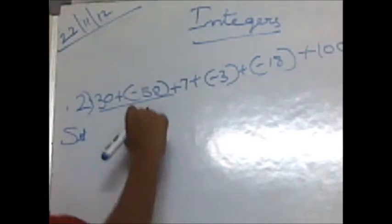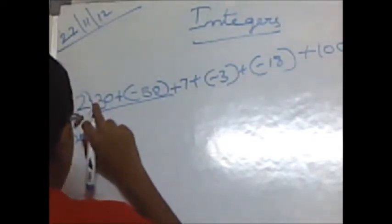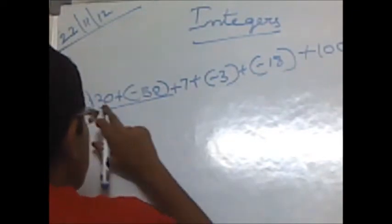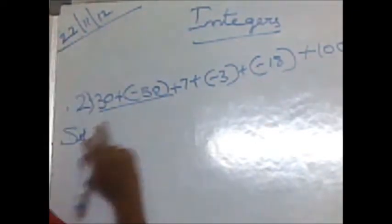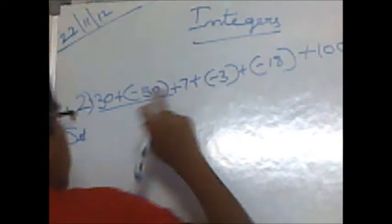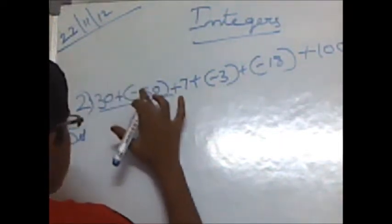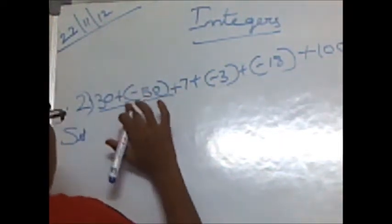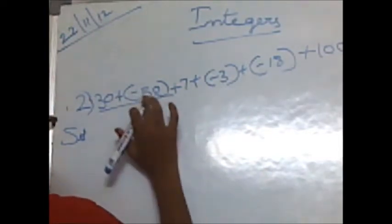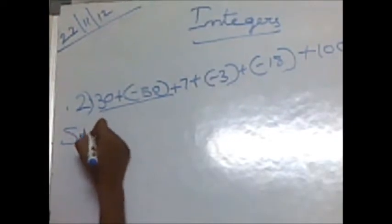First, we have 30 plus minus 50. Here 30 is plus and 50 is minus, so minus plus is equal to operation minus. We do 50 minus 30 equals 20. The absolute values of plus 30 and minus 50 are 30 and 50. The greater number is 50, so 50 has the minus sign — answer is minus 20.